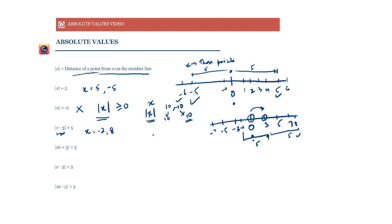When we have another term inside the modulus — like x minus 3 or x plus 5 — we move our reference point by that amount. Since we have x minus 3, we go 3 ahead and calculate the distance from that point. If it were x plus 3 instead, we would move three steps back and calculate the distance of 5 from minus 3.